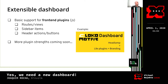You might ask: if this is generic, what about the Locomotive dashboard? The idea is that Locomotive takes Headlamp as a base and adds a few Locomotive-specific plugins, plus branding. We'd ship a single image that is the full dashboard with those plugins built in — but this keeps the core completely independent from us.